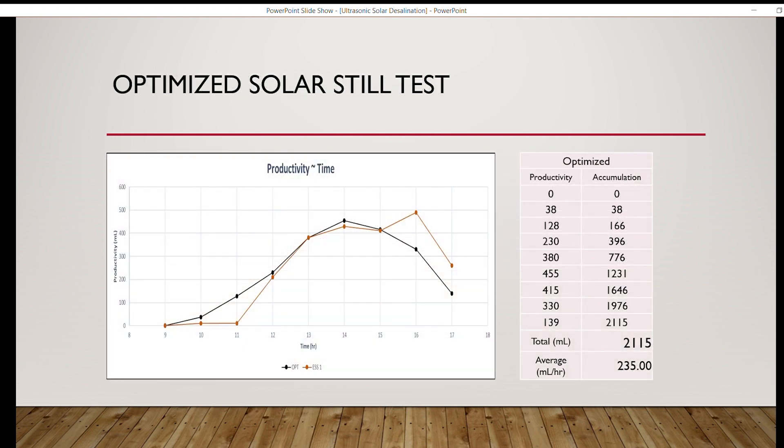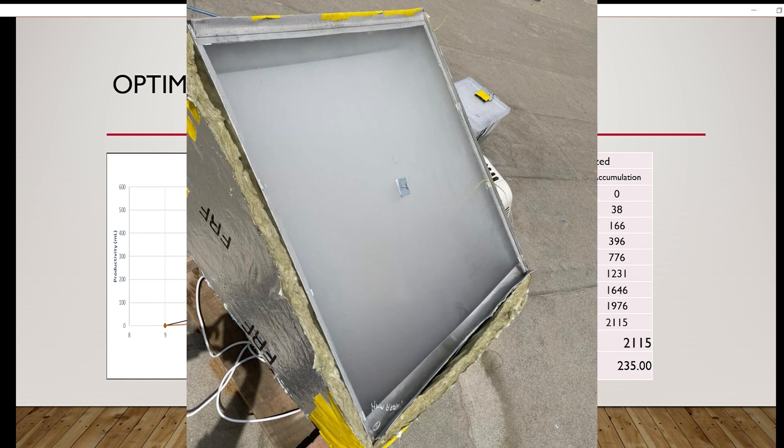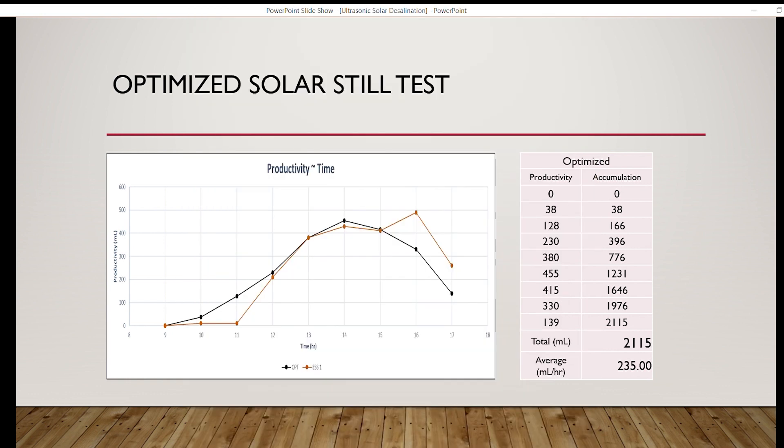The main causes behind the lower productivity of the ultrasonic solar still is the mist accumulation in the solar still, in addition to the weather conditions that were not ideal during the following tests. However, upon introducing the atomized droplets, and under better conditions, a higher output is expected.